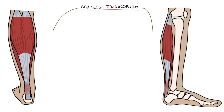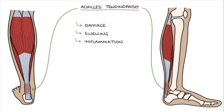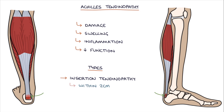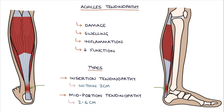Achilles tendinopathy involves damage, swelling, inflammation, and reduced function in the Achilles tendon. There are two types of Achilles tendinopathy. Insertional tendinopathy occurs within two centimetres of the insertion point of the Achilles on the calcaneus bone. Mid-portion tendinopathy occurs two to six centimetres above the insertion point.